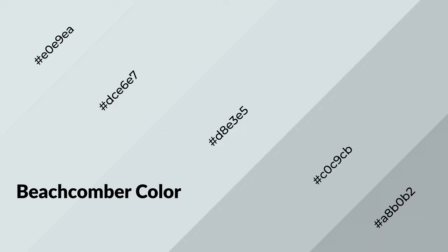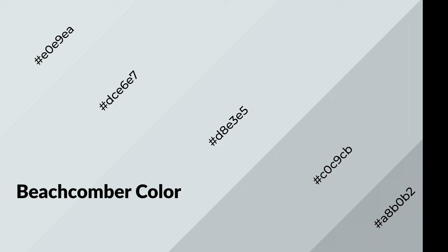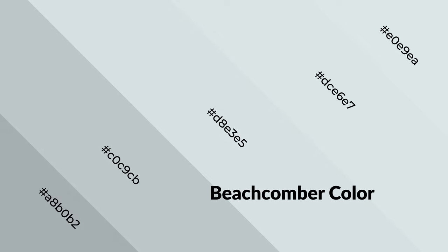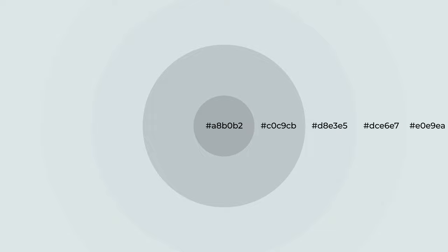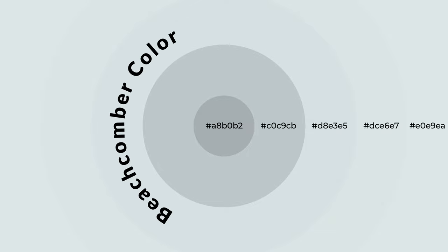Beachcomber is a cool color and it emits calming, serene, soothing, refreshing, spacious, unwinding, peaceful, and relaxed emotions. Cool colors are like water, ice, sky, grass, and snow. You can see them used in baby products.